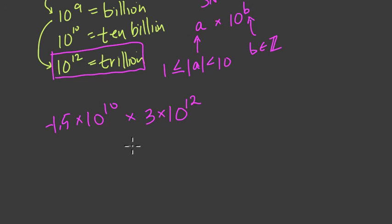First, we can commute the numbers around or change the order. So we have 3 times negative 1.5. I'm going to associate those two together. And then multiply that by the two powers of 10. 10 to the 10th times 10 to the 12th.